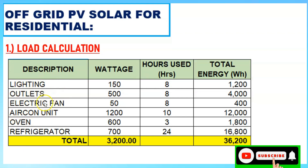For lighting, assume all lights combined have a wattage of 150 watts, used for 8 hours a day, giving a total energy of 150 × 8 = 1,200 watt-hours. For outlets, assume 500 watts used for 8 hours, giving a total energy of 4,000 watt-hours.